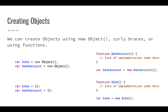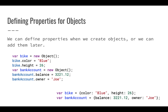Using a function to create objects is useful for reusing code. We can define properties a couple of different ways. On the left side, we create a new bike, set it equal to an object, and give it a color — bike.color is set to blue. We do the same with height, setting it equal to 26. Similarly, for bank account we create a new object, give it a balance property set to $3,221.12, and give it an owner set to Joe.